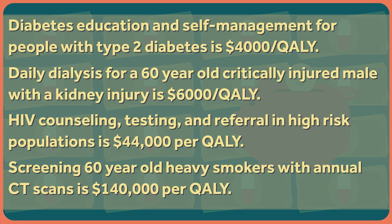A sample of cost-effective things from the Tufts Cost-Effectiveness Analysis Registry can give us some comparisons. Diabetes education and self-management for people with type 2 diabetes has a cost-effectiveness of $4,000 per QALY. Daily dialysis for a 60-year-old critically injured male with a kidney injury is $6,000 per QALY. HIV counseling, testing, and referral in high-risk populations is $44,000 per QALY. And screening 60-year-old heavy smokers with annual CT scans, which is recommended by many professional groups, is $140,000 per QALY.